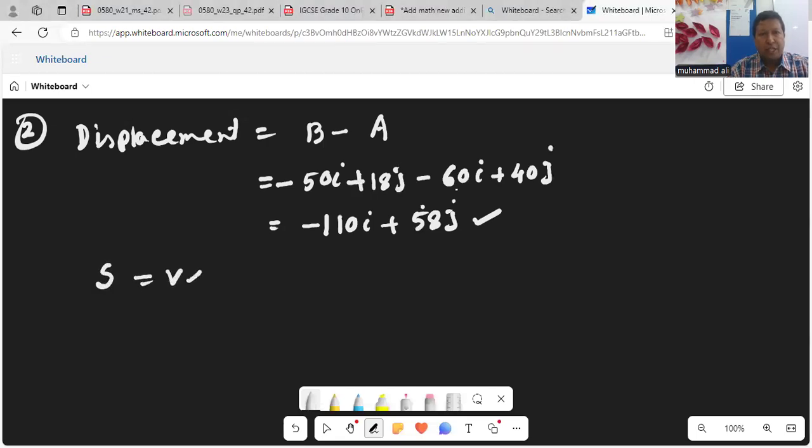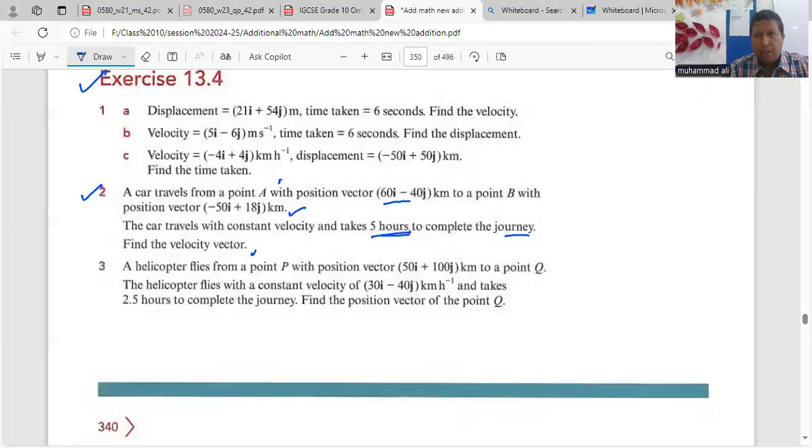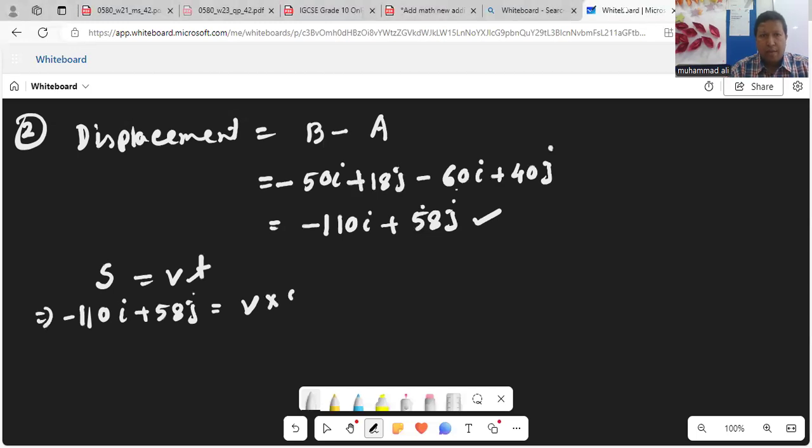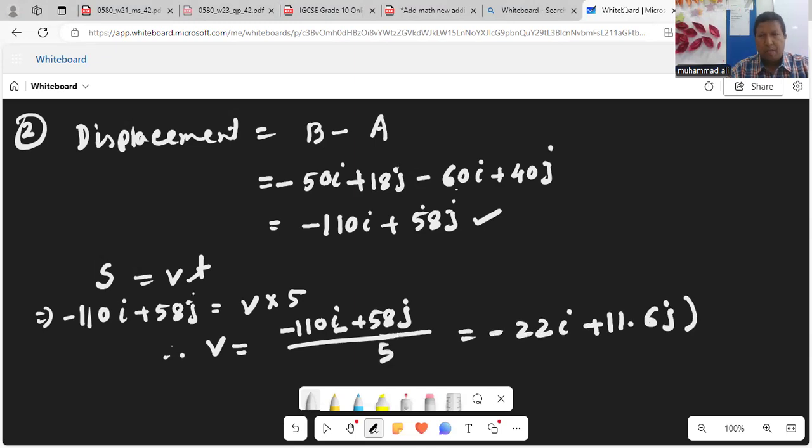You know that S equals Vt. S is here minus 110i plus 58j. V, here time is 5 because it is given, time is 5 hours. So V into 5. Therefore V equals if we divide minus 110i plus 58j divided by 5, we will get minus 22i plus 11.6j meter per second.